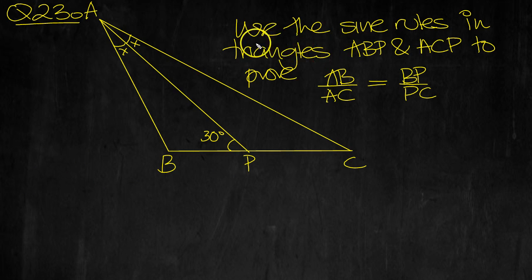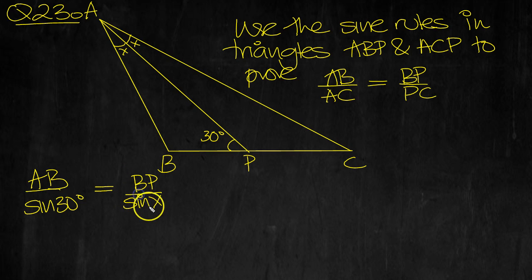Use the sine rule in triangle ABP. So AB over sine 30 is equal to BP over sine of X. Okay, that's AB and BP.